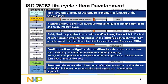From the item perspective, an item is a system or array that gets implemented as a function at the vehicle level. A safety goal is applied only at an item that is in context with the car; everything else is kind of an interface with the item, meaning it is handled through a development interface agreement. The fault detection, mitigation, and transition to a safe state is an item-level requirement, but this could be translated into a set of features or safety requirements at the component level.